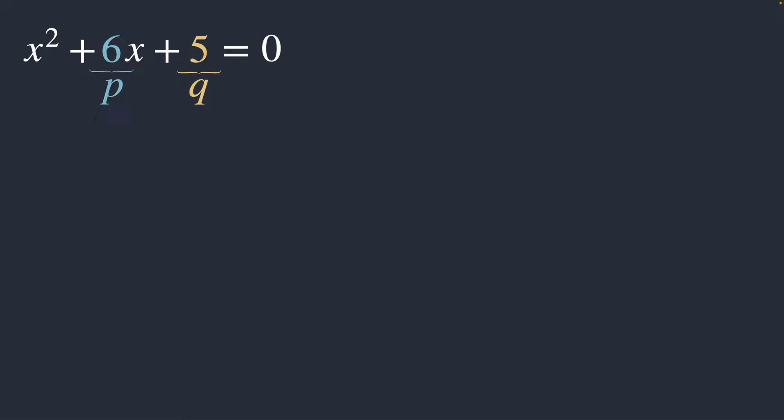And we need to do this so we can make use of the PQ formula, which says that we can find the values of x by taking negative P over 2. Then we have two cases, so plus or minus the principal square root of P over 2, and that will be quantity squared minus Q.